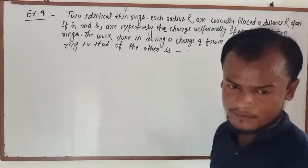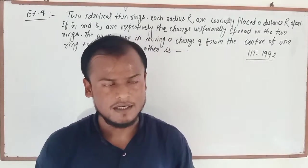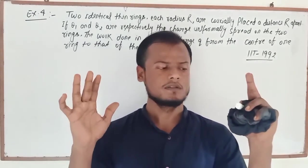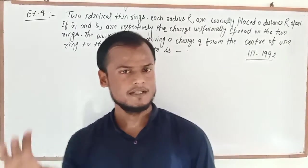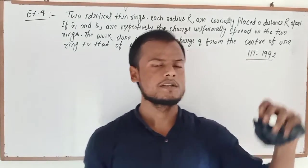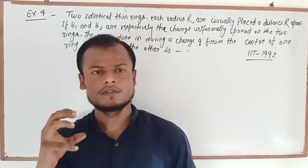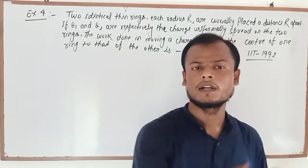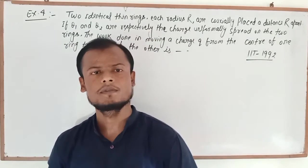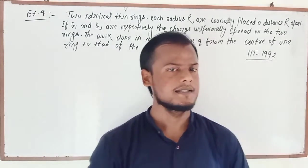In this question, I will explain to you that two rings are capital R radius, and the distance between the two rings is capital R. One charge is Q1 and the other is Q2. If small q charge is carried from center one to center two, then we need to find the work done in carrying charge from one center to another center. This is how I am going to explain it.